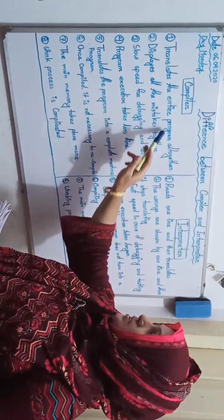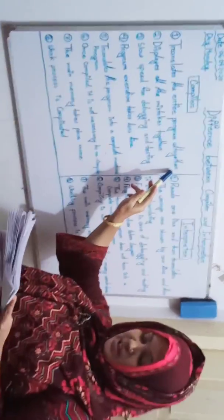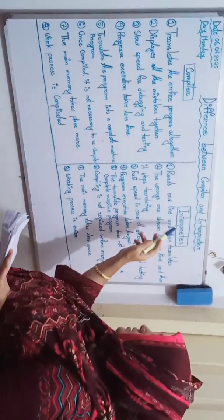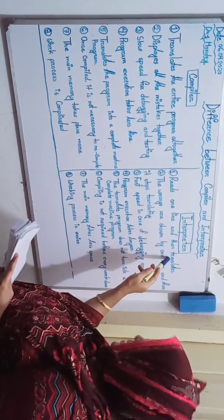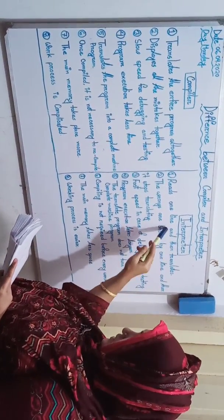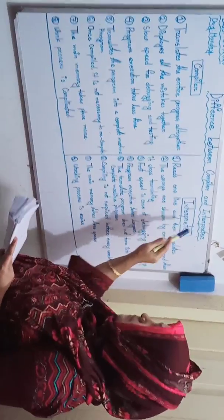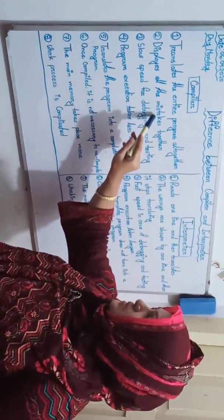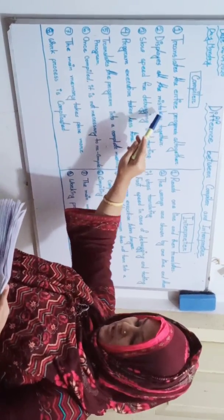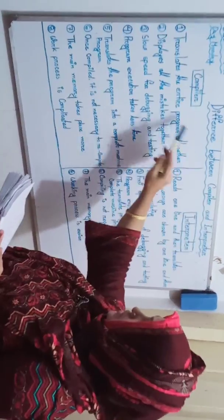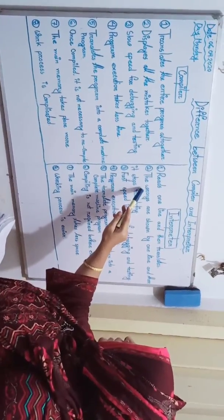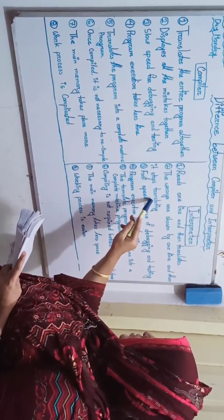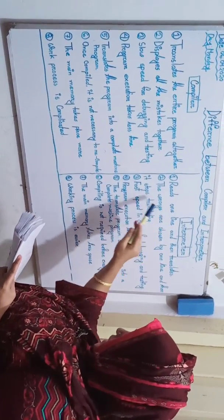Number one: Compiler translates the entire program all together, that means it takes entire program at a time. Interpreter number one reads one line and then translates, that means it takes single line of code, instruction by instruction at a time. Compiler number two displays all the mistakes together, that means display all errors at the same time after completion. Number two: Interpreter shows errors line by line and then it stops translating, that means displays error of each line one by one.